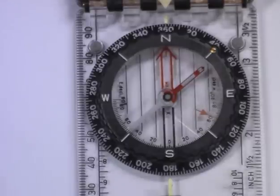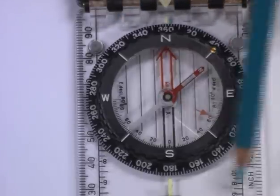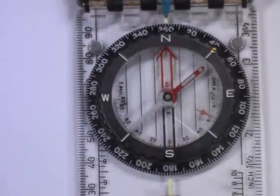So here we have a typical compass. Around the outside we've got a series of numbers. This is called a bezel. And we've got numbers from zero all the way around to 360.